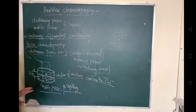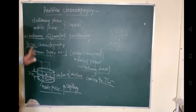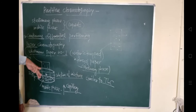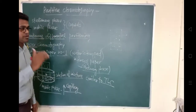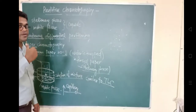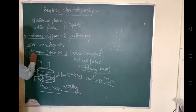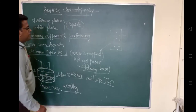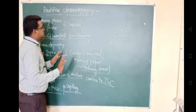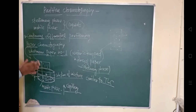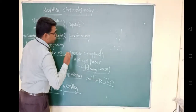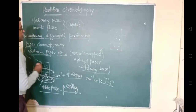In partition chromatography, Whatman paper is used directly and there is no adsorbent present, because this is based on the difference in partition between two liquid phases — both the stationary and mobile phases are liquid. If the mixture contains colored components, you will directly observe the color difference. If the components are not colored, you can use UV light or a spraying agent to visualize the separated spots.